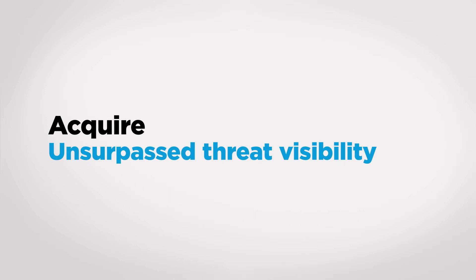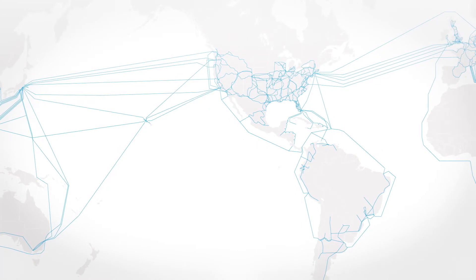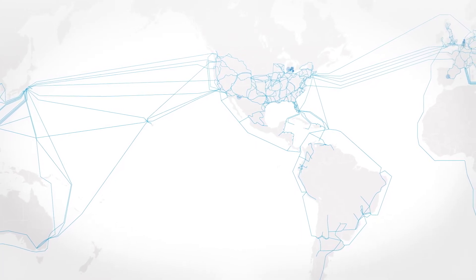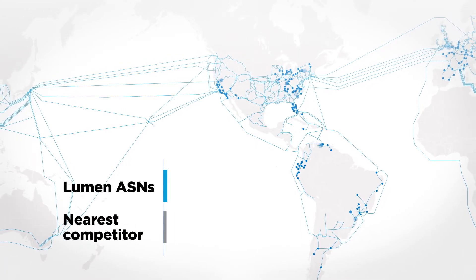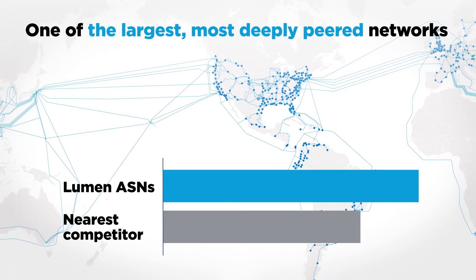First, Black Lotus Labs acquires information about threats across the internet using Lumen's global internet backbone. Lumen owns and operates its internet backbone. It's one of the largest, most deeply peered networks.